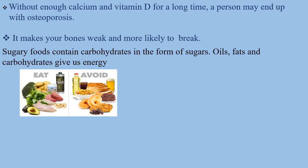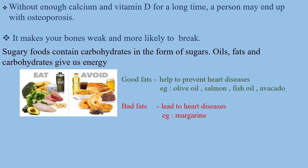Here are the foods we have to eat and the foods we have to avoid. Good fats help to prevent heart diseases. Foods that contain good fat include olive oil, salmon, fish oil, and avocado. Bad fats lead to heart diseases — margarine contains bad fat, so margarine is not good for our body.